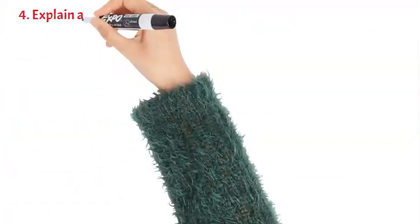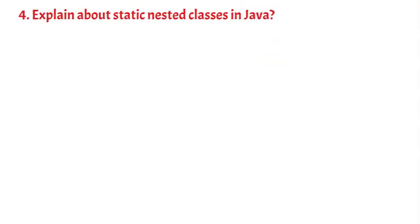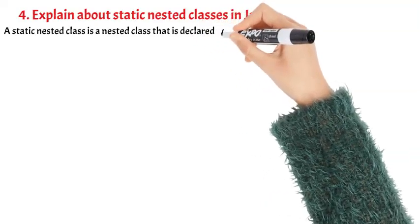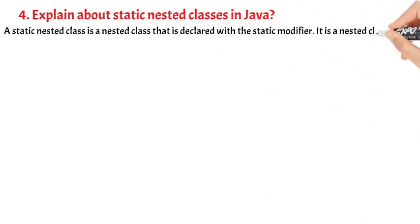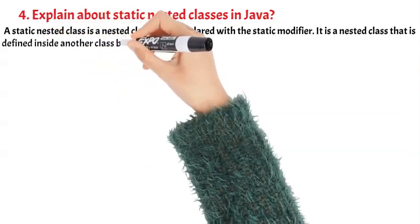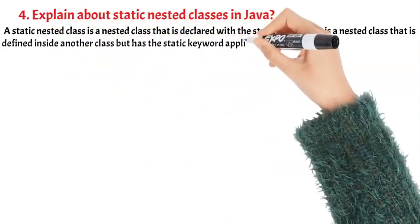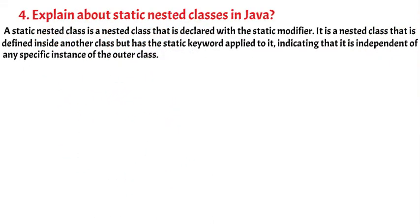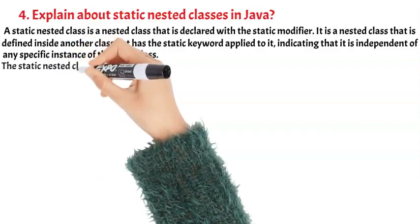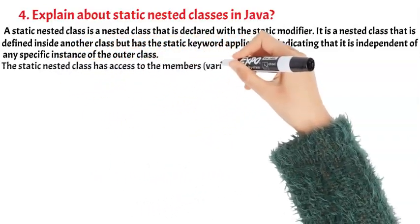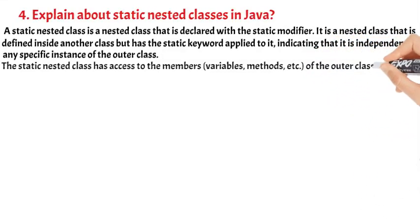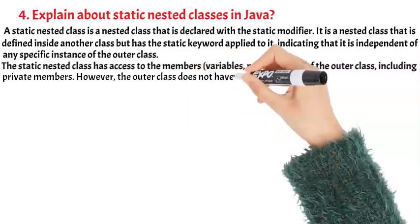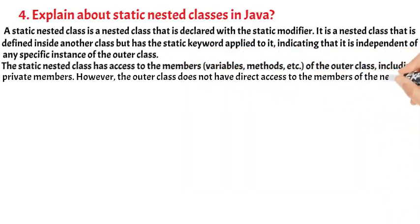A static nested class is a nested class that is declared with the static modifier. It is defined inside another class but has the static keyword applied to it, indicating that it is independent of any specific instance of the outer class. The static nested class has access to the members — variables, methods, etc. — of the outer class, including private members. However, the outer class does not have direct access to the members of the nested class.